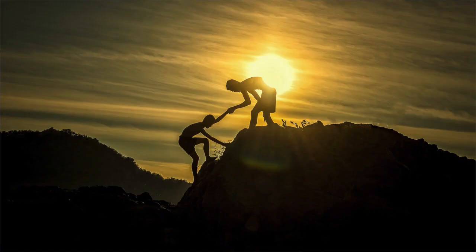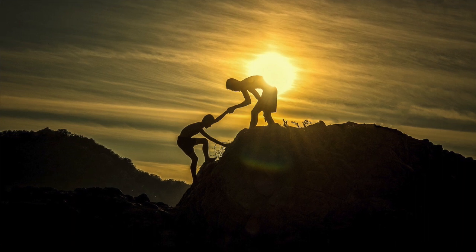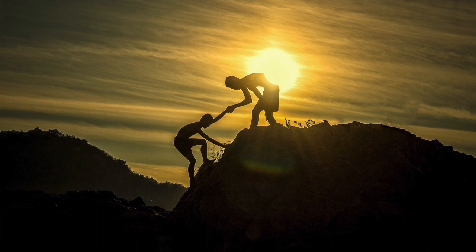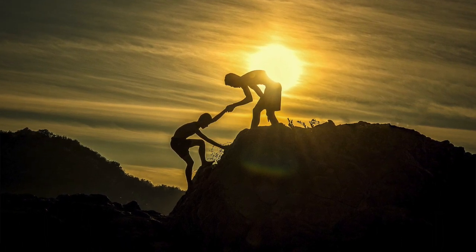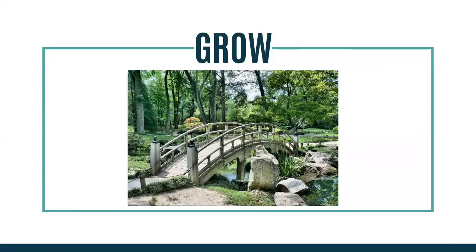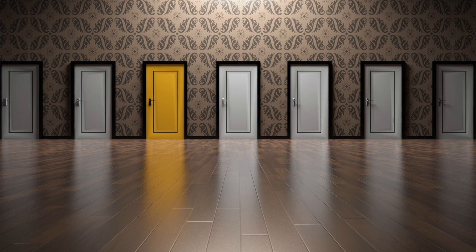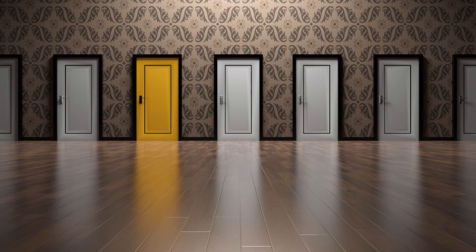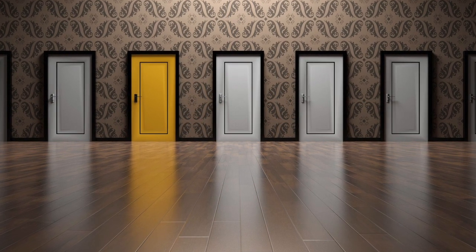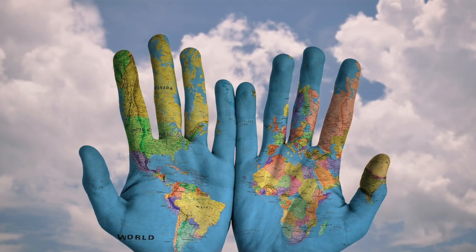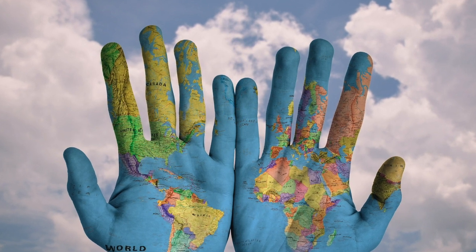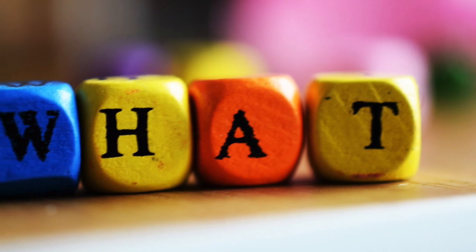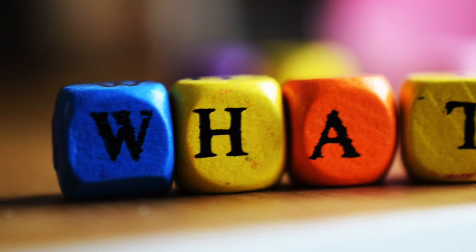The R in GROW is about understanding the reality — the challenges that will show up, what will slow you down or get in your way. The O is options: once you know what you want and what's in your way, come up with three to five, maybe ten ways to overcome each challenge. That gives you essentially a map to navigate through. The W stands for what will you do next.